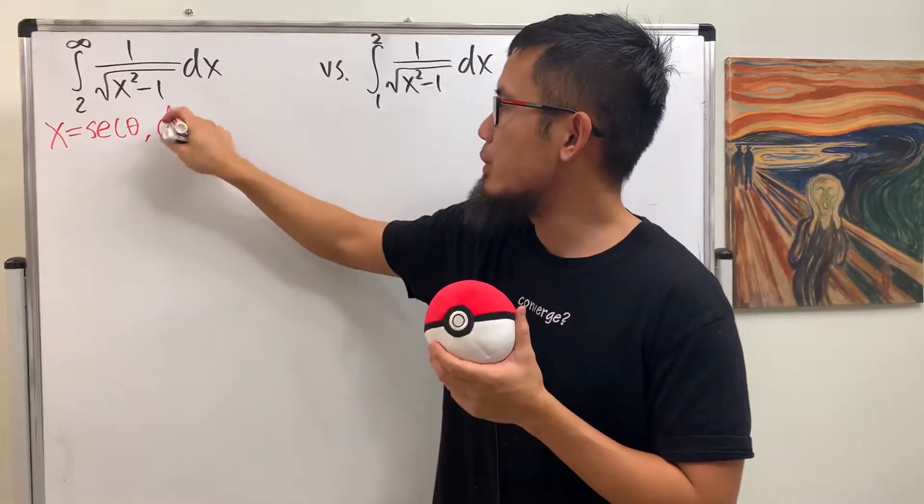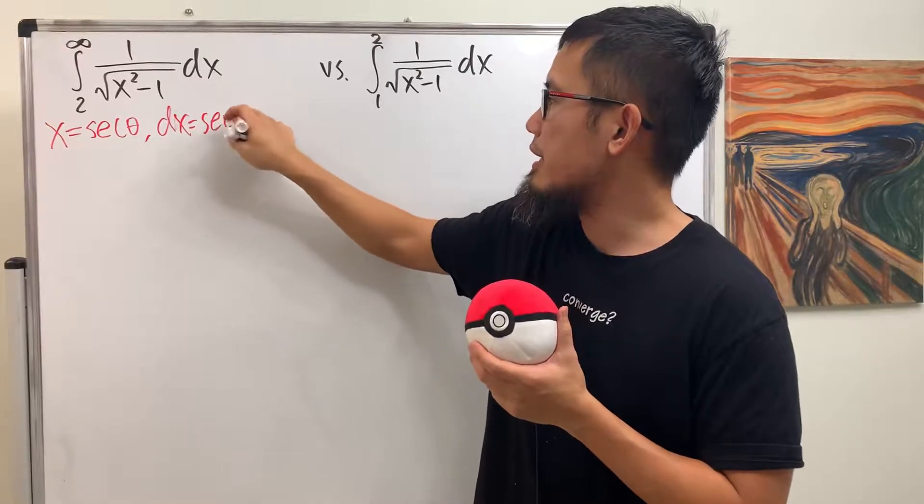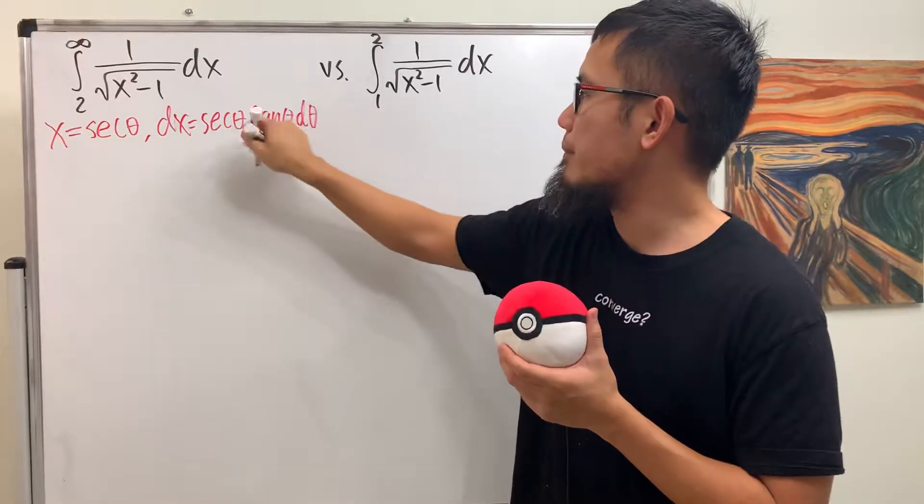And then you see that this way, dx will give us secant theta tangent theta, and of course you have the d theta right here. Perfect.